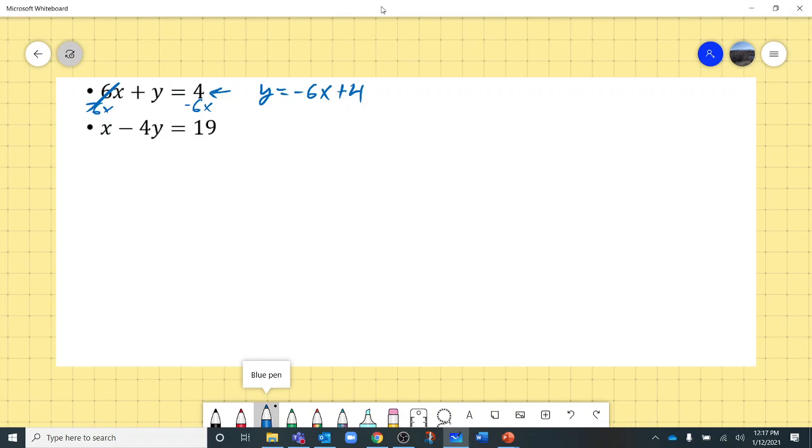Or y equals 4 minus 6x. It's the same thing. I just put the x first to kind of keep it in the same form, okay? But if you have 4 minus 6x, that's fine. Or even 4 plus negative 6x, all the same value, and that's fine.